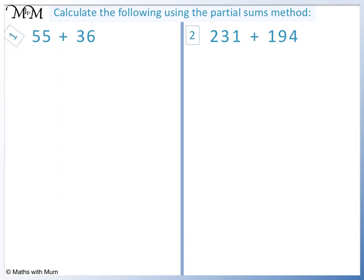Question 1. Adding the tens: 50 plus 30 equals 80. Adding the ones: 5 plus 6 equals 11.